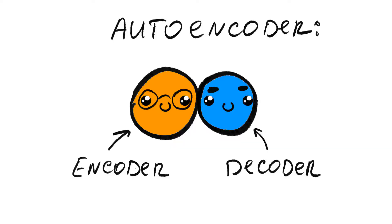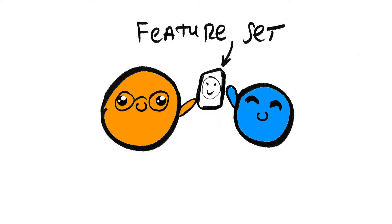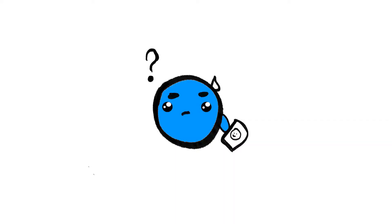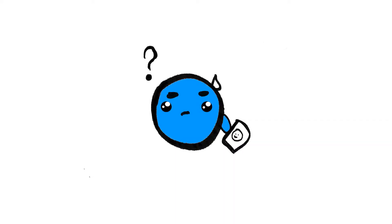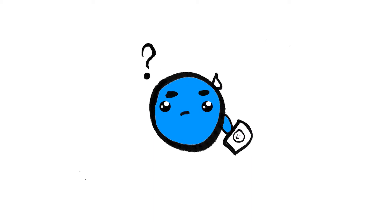To wrap it up, we use an autoencoder, which has two pieces of the puzzle: the encoder and the decoder. The encoder compresses your face into basic latent features that make you uniquely you. We call these latent features the feature set, and the autoencoder then sends that information to the decoder. The decoder then does the heavy lifting and figures out how to merge and put a celebrity's face on top of your original face.